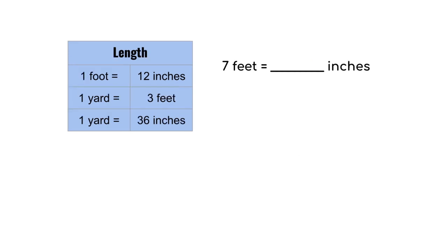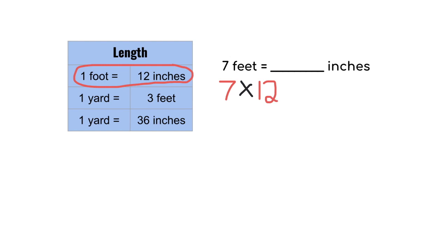Let's try another length conversion. We're starting with seven feet, and we want to know how many inches that is. So we're going to start with seven. We're going to multiply, because we're going from a larger unit of feet to a smaller unit of inches. We find the correct conversion — the one in the chart that has feet and inches together — which says one foot is equal to 12 inches. So we multiply seven times 12, and we get 84 inches. Seven feet equals 84 inches.